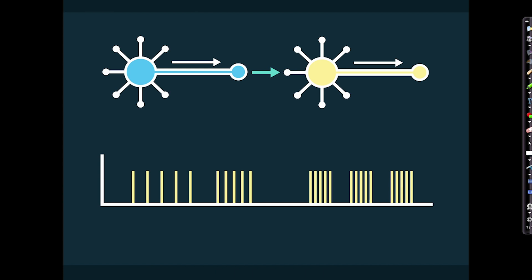Here we have a pre-synaptic neuron, and this is our post-synaptic neuron. Here we have an action potential traveling along, releasing a neurotransmitter — let's assume it's excitatory, let's assume it's glutamate in this case. And if the membrane potential in the post-synaptic neuron reaches the threshold, then it also fires an action potential. This is basically how neurons are speaking to each other. At the bottom here, we can see this neuron is actually firing a series of action potentials — this is, again, a spike train.